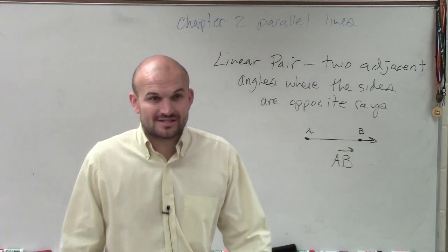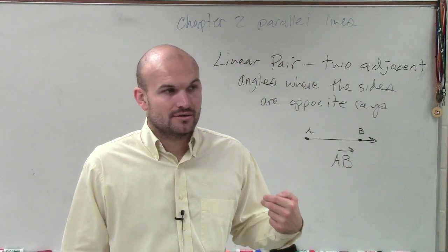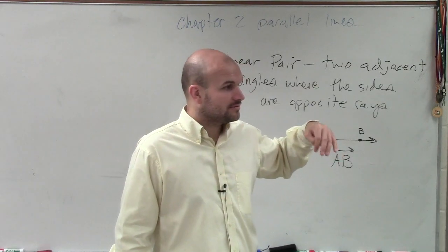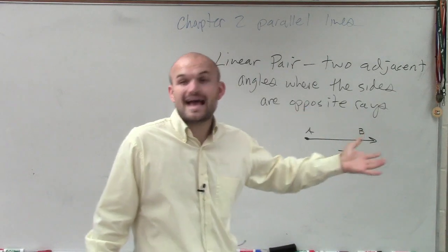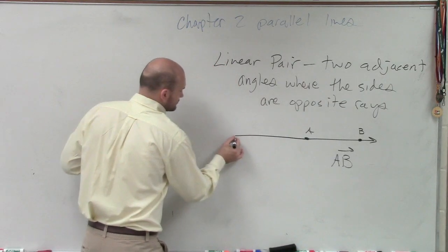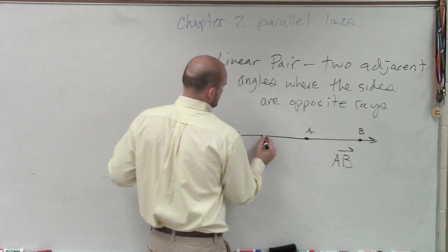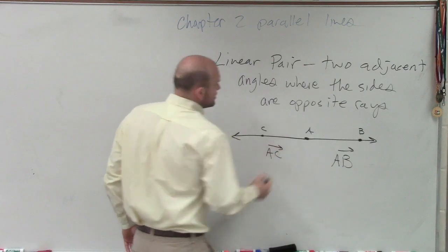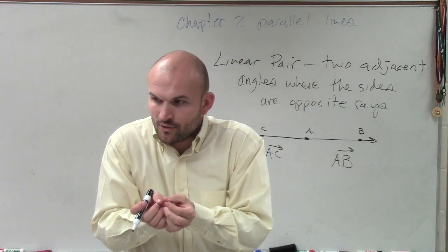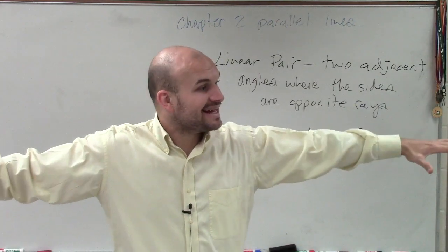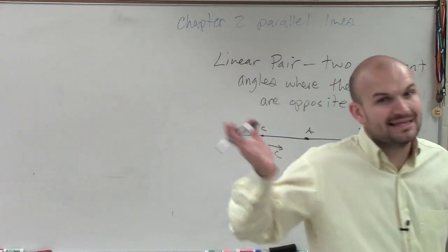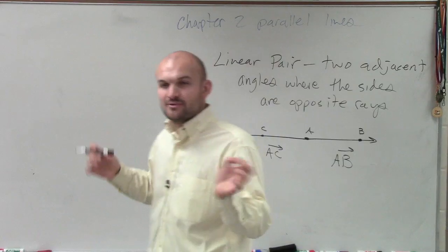If we talk about opposite rays, the opposite ray would be going in the exact same direction — but what else does it have to share? The endpoints, right? So AC and AB are opposite rays. They share a common endpoint, they go in opposite directions, and they also form a line. That's really important about opposite rays — opposite rays form a line.